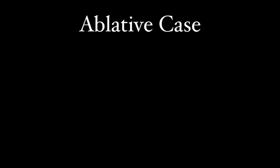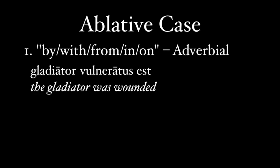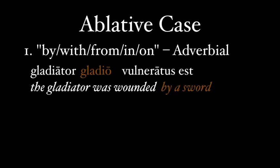The ablative case is perhaps the most complex of all the cases. It's standard to use the words by, with, from, in, or on when translating the ablative, and these five prepositions illustrate many of its different uses. In short, the ablative case kind of turns the noun into an adverb. For example, 'gladiator vulneratus est' — the gladiator was wounded. We can ask how he was wounded and answer with an adverb like 'violenter,' violently, or with an ablative noun: by a sword, gladio. It will take a long time to cover all the uses of the ablative, so just remember by, with, from, in, on, and pick the one that makes the most sense.